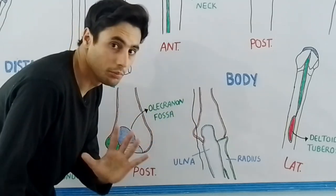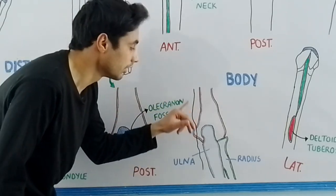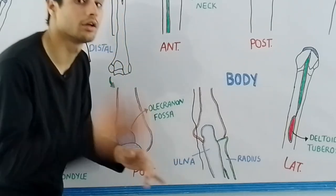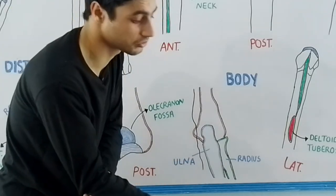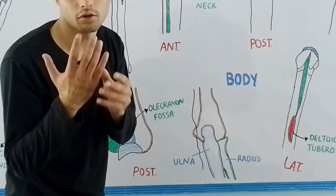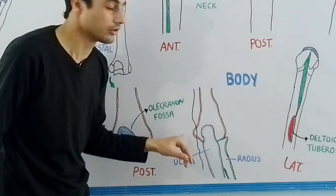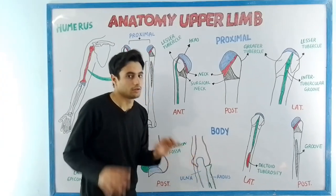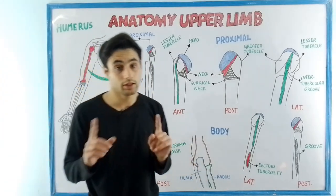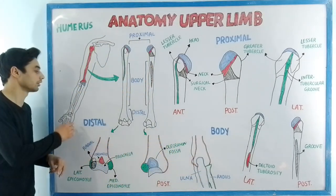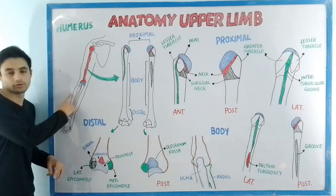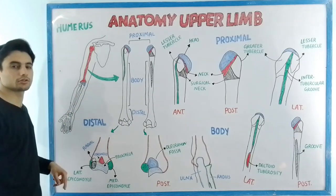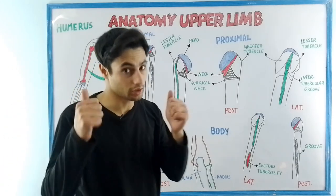The medial epicondyle is really important because the ulnar nerve passes over it. During tingling sensation of your medial hand or the fifth digit, the ulnar nerve is in contact with the medial epicondyle. In the next video we are going to learn about the bony features of the radius and the ulna. Please like, share, and subscribe.